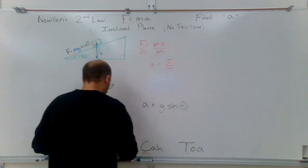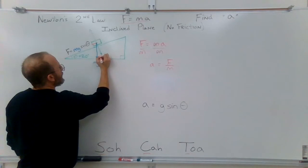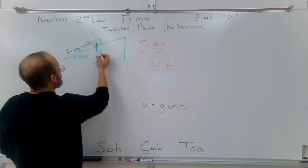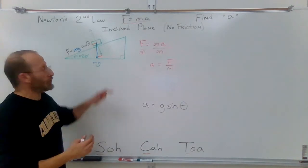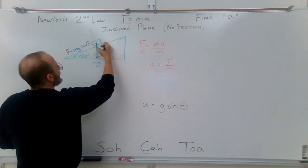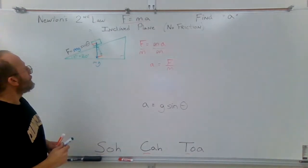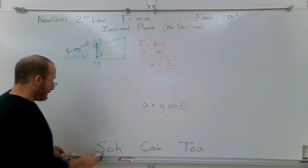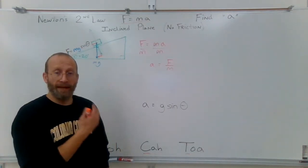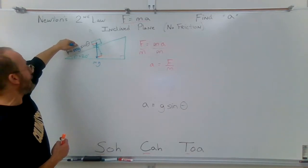If you've worked with vectors, you know you can add these two components together. The orange component going down the hill, added to the perpendicular component, completes a right triangle — a similar triangle to the main slope triangle. So this angle right here is also theta, 20 degrees. Now we have a right triangle and can do some trigonometry. The orange arrow represents the vector of force sending the sled downhill, and that force can be calculated as mass times gravity times the sine of 20 degrees.